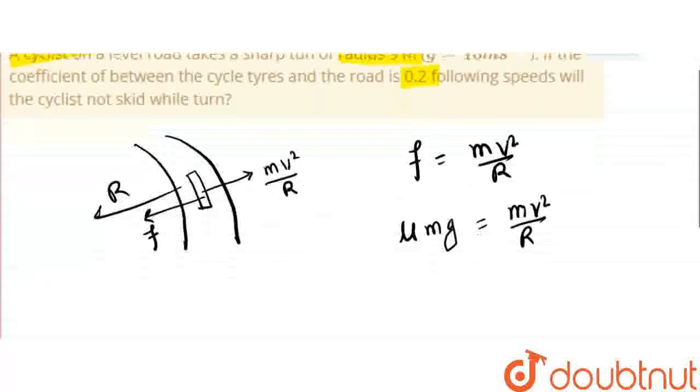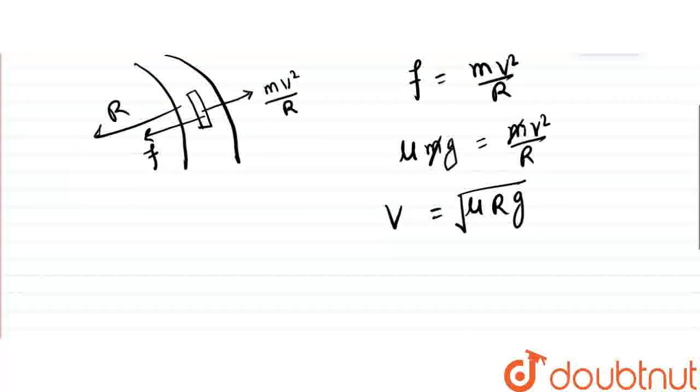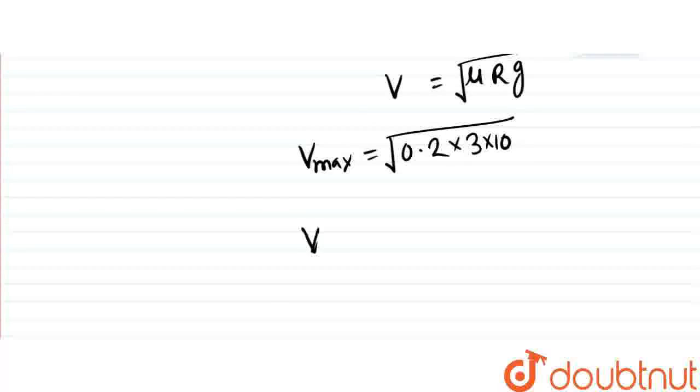For friction greater than or equal to mv²/r, the masses cancel. Velocity maximum is √(μrg). Putting values with μ = 0.2, r = 3, and g = 10: v_max = √6 meters per second.